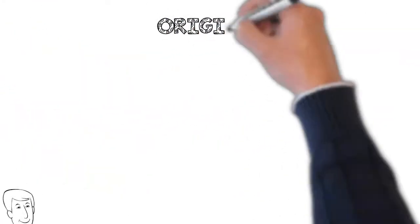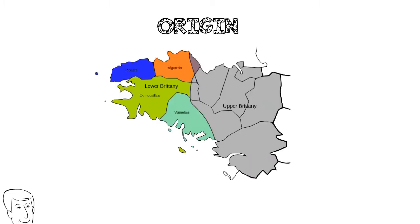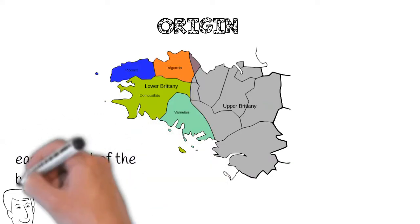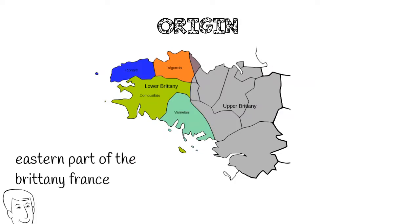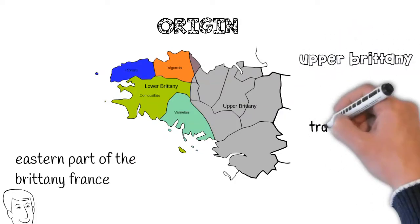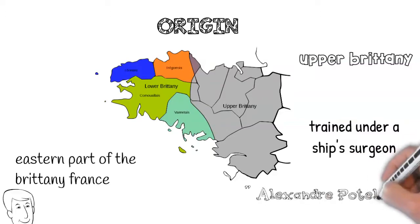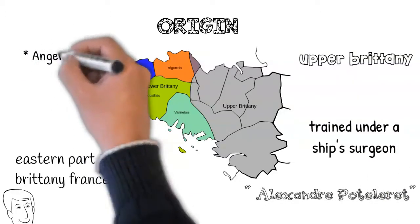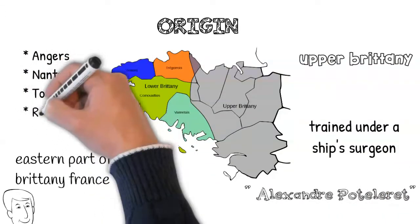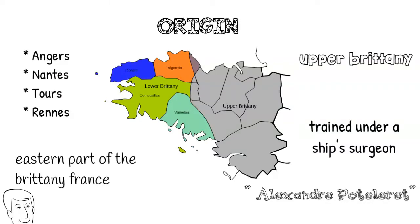Looking at the origins of this great personality, the Fauchard family of the eastern part of Brittany, France, which was then known as Upper Brittany, was trained under a chief surgeon in the French Navy Alexandria. Fauchard rapidly developed a successful practice treating from the area around cities of Angers and others.